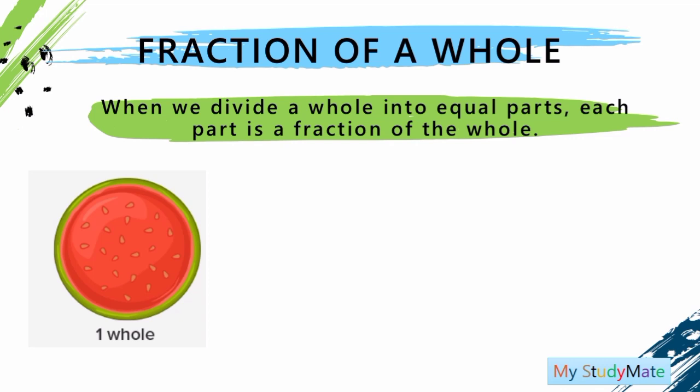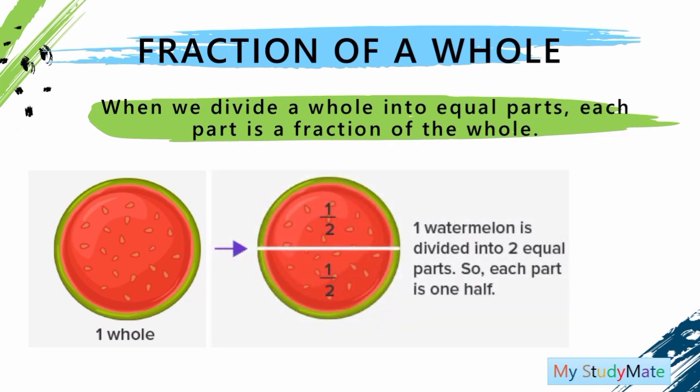For example, we have one whole watermelon. If this one watermelon is divided into two equal parts, each part is one half. So, therefore, the upper part is one half and the lower part is another one half.